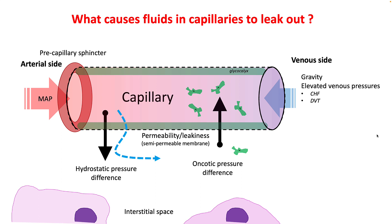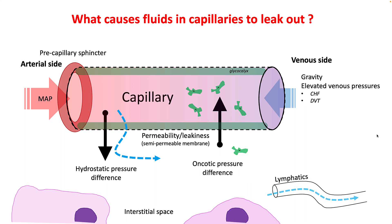The second factor is your oncotic pressure gradient, which depends upon the concentration of plasma proteins versus the interstitial space. Whatever excess fluid has leaked out is returned to the circulatory system via lymphatics. So there are only four reasons why you can develop edema: problems with permeability or leakiness, changes in hydrostatic pressure, changes in oncotic pressure, and problems with lymphatics.